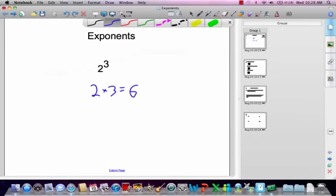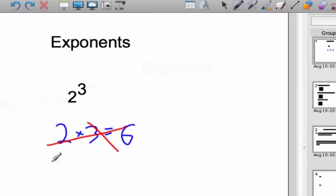What it's saying, I'm going to cross that out so we know that's wrong. 2 to the 3rd is saying we're multiplying 2 three times. So it's always helpful when you're doing these to show the work. Write it out: 2 times 2 times 2.